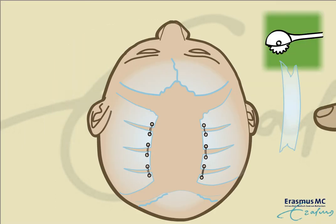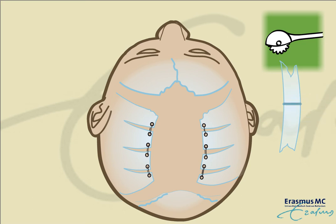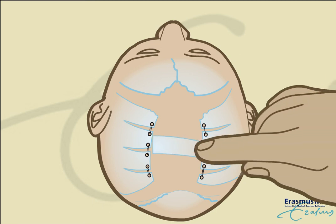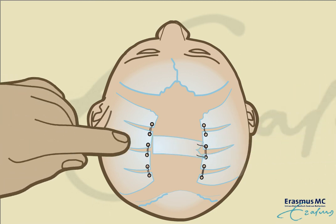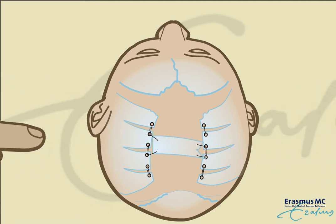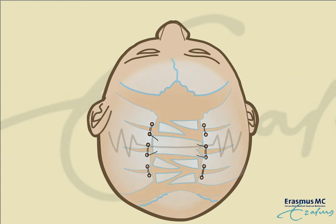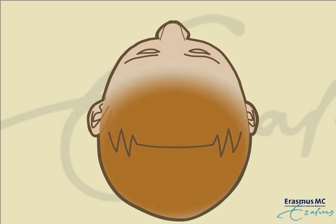To fix the width of the skull, the bone strip is rotated 90 degrees and attached to the bones. All remaining bone pieces are used to reduce the resulting bone gaps. This allows a more complete closure of the skull, which ensures protection of the brain.